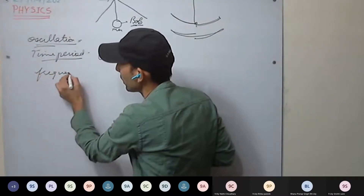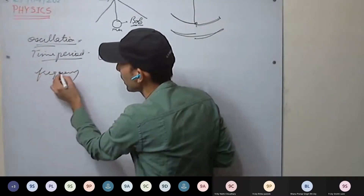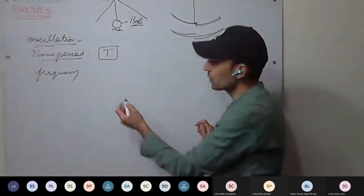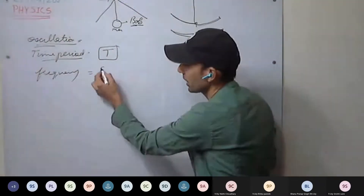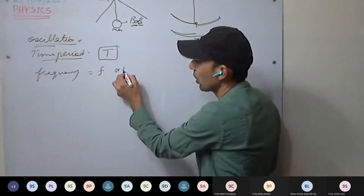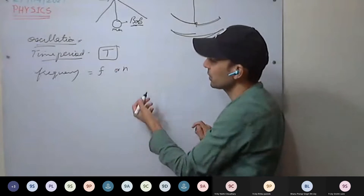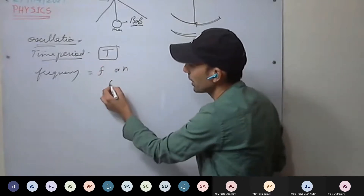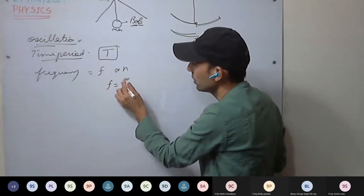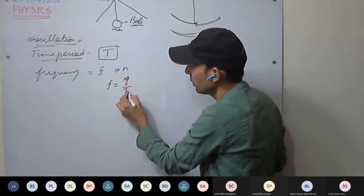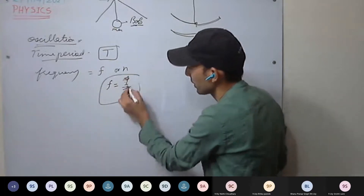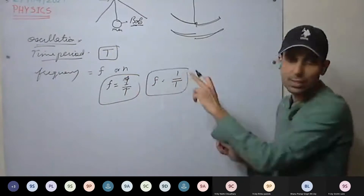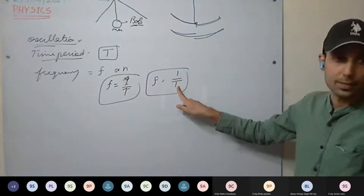After that we discussed frequency — that is the number of oscillations made in one second. We denote it with f, or n, or in earlier classes you have used mu as well. Frequency is inversely related to time period: f = 1/T.